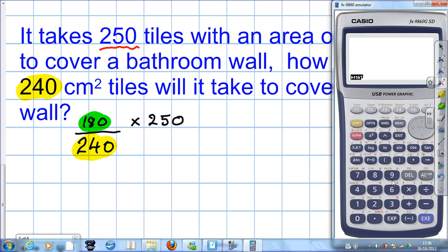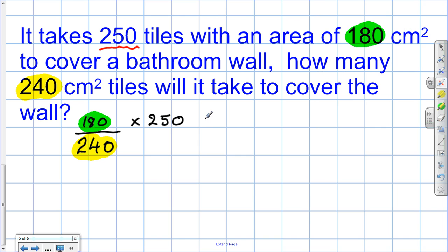180 over 240 times 250. We need 187.5 tiles. Does that fit in with what we were thinking? Yeah, there is an indirect proportion here. The number of tiles and area are in indirect proportion. So the bigger the tiles, the fewer we would need.